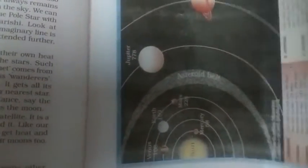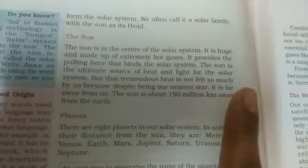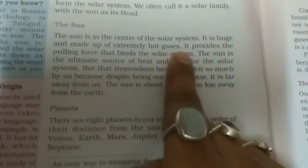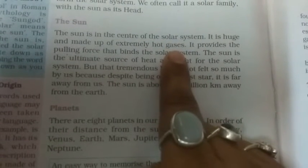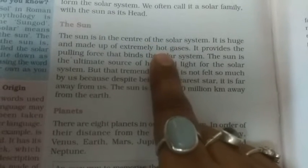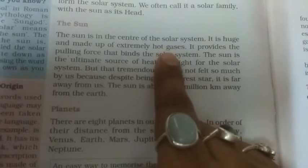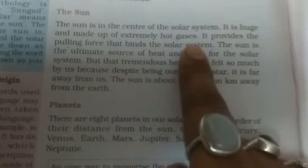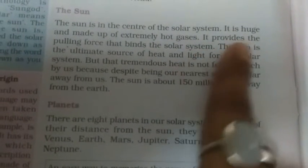The sun is in the center of the solar system. It is the head of our solar system and it is a static celestial body, not a moving celestial body like the planets and asteroids. The sun is made up of extremely hot gases and is a huge ball of burning hot gases. It provides the pulling force that binds the solar system, similar to how the earth has a gravitational force.